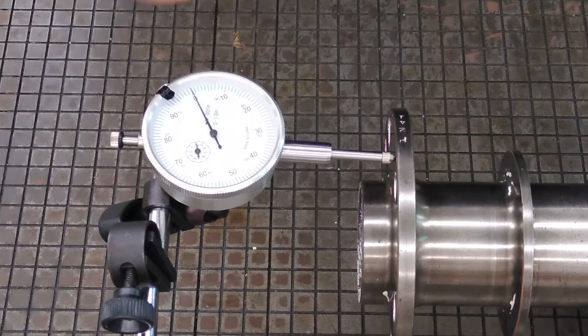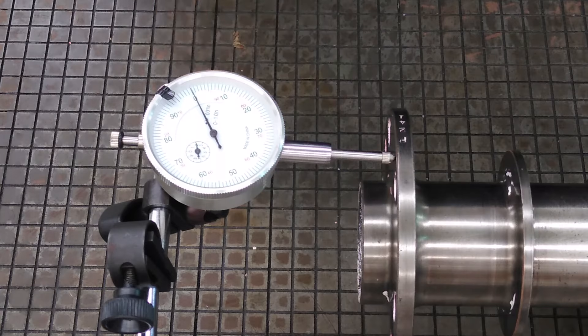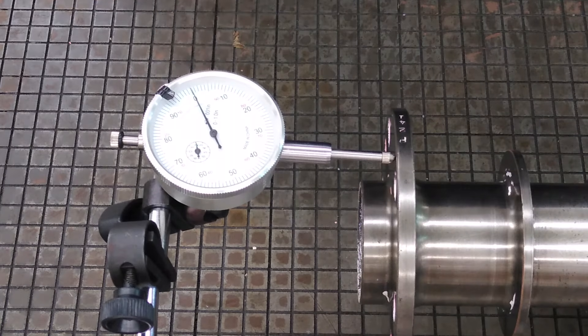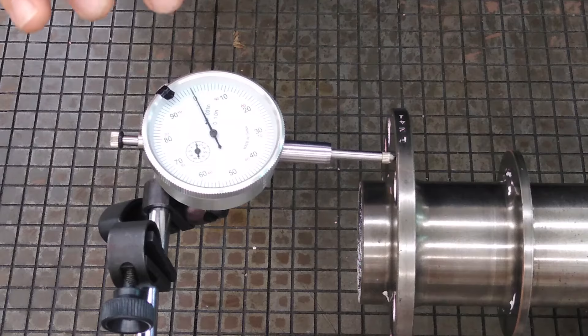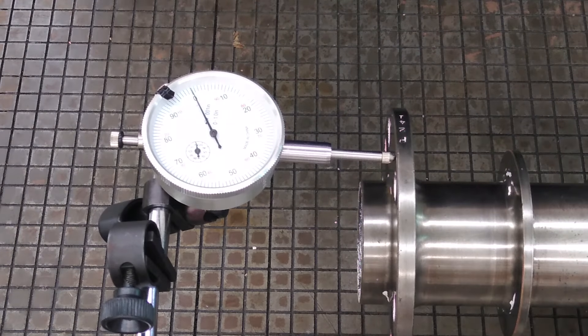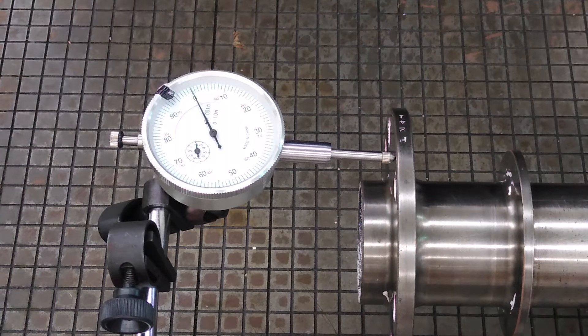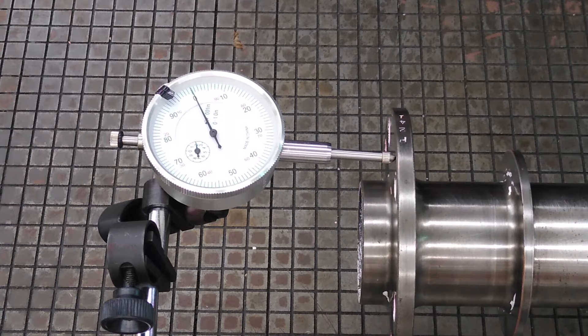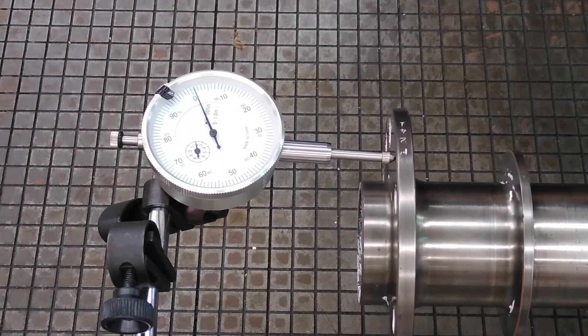You would set up your dial indicator the same way. Zero out your pointer, or zero the dial face to where the pointer is. You start from a good point of reference. And again, you slowly rotate the crankshaft.